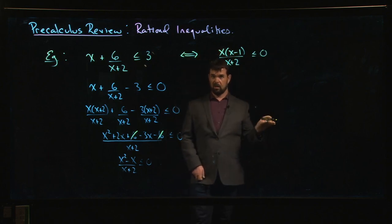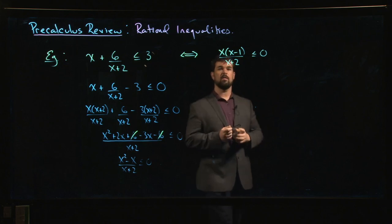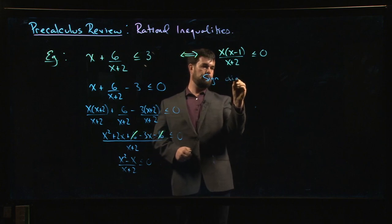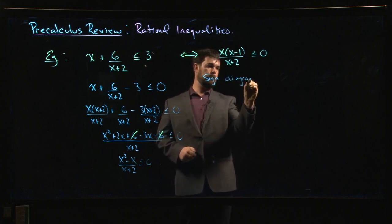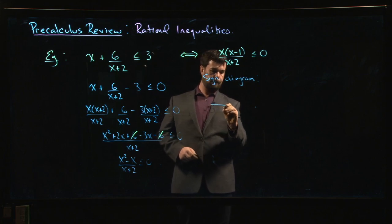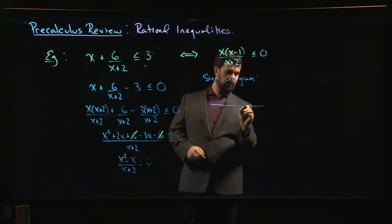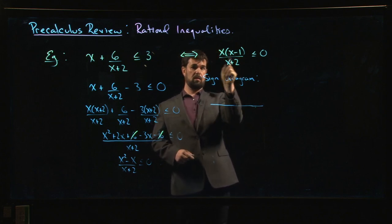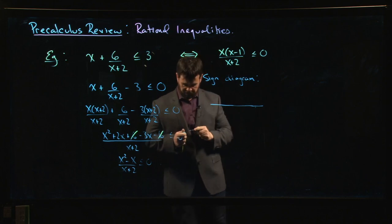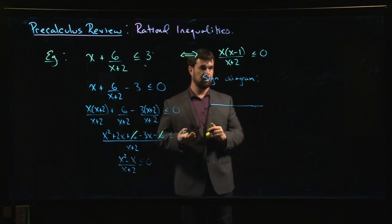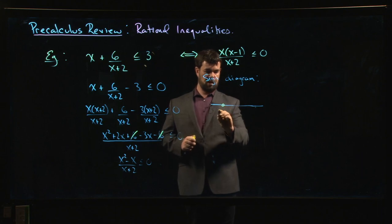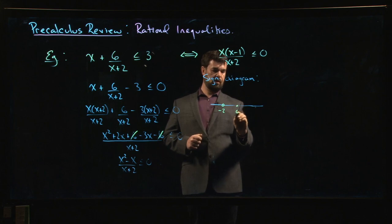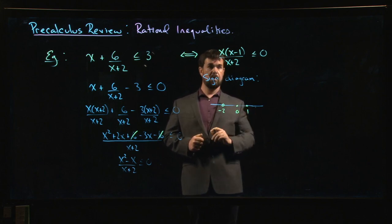The way we solve this is we look at a sign diagram. And again, if you want to, you can think graphically. You can think that this is a rational function with two x-intercepts and one vertical asymptote, and there's going to be a sign change at each of them. Okay, so there's an asymptote at minus 2, there's an intercept at 0, there's an intercept at 1.